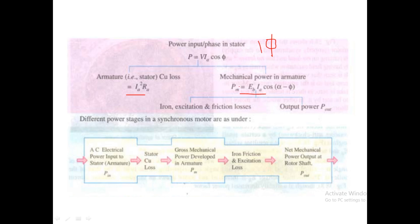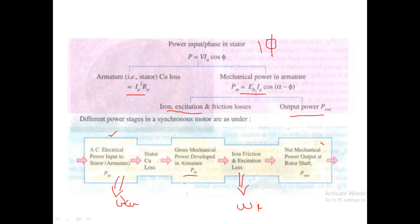In the mechanical power, a part of that power will be used for the output power or for conversion to torque, and one part will be used for iron, excitation, and frictional losses. There are different power stages in a synchronous motor. We give electrical power input to the stator; one part is lost as stator copper loss, and the remaining is the gross mechanical power development. From that, one part is lost as iron loss Wi, and the remaining is the net mechanical power development, P_net.